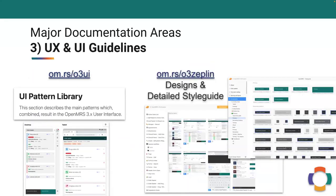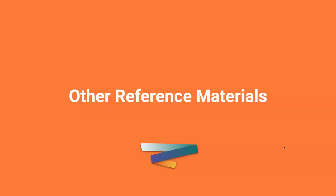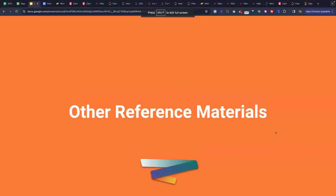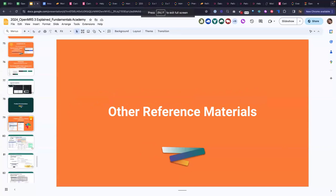We've obviously covered the UX and UI guidelines, but one more time in case you didn't get them earlier, here are the two links to both the UI pattern library and the design folders and detailed style guide. That was the main thing for documentation — if I've forgotten something, I'm sure it'll come back to me in the next few minutes.